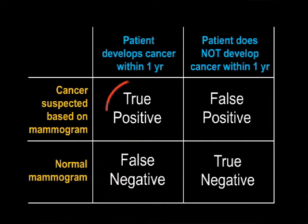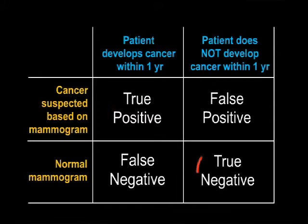The true positive is you see something and she gets cancer in the year — that's a true positive. And the last one, the true negative, is you don't see anything and nothing happens in the year.